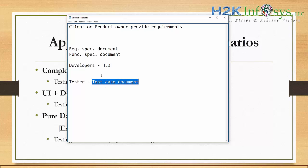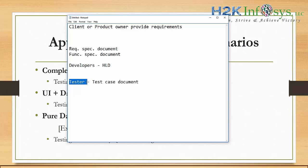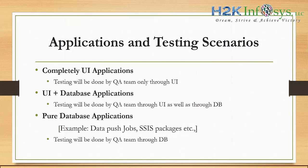Once developers complete the coding, the tester will test all scenarios. That is called a complete UI application, where a tester need not worry about the internal functionality or internal tables that are involved — it's complete UI testing.